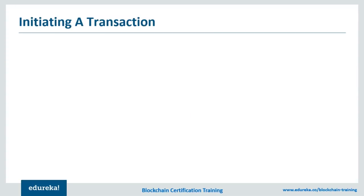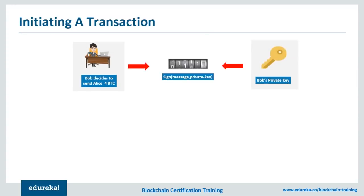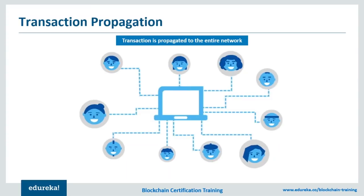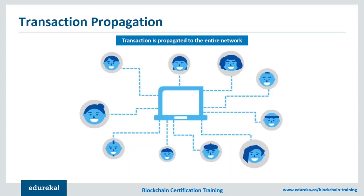When Bob decides to send Alice four bitcoins, he generates a digital signature. This digital signature is generated using a function which takes in the message and Bob's private key as the arguments. Since the message in practicality should be different every time and only Bob knows his private key, the signature generated will be unique every time, making it almost impossible to replicate without knowing both the message and the private key. The message is then decrypted on Alice's side using a similar function that takes in the message, signature, and Alice's public key as the argument. If a wrong signature was provided with the message, the function would just throw an error. After Bob commits the transaction to the network, the transaction is put in a block and broadcasted through the network, and every peer participating in the network can view the transaction and attempt at validating it.